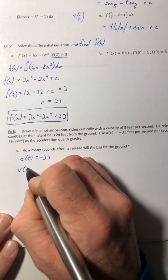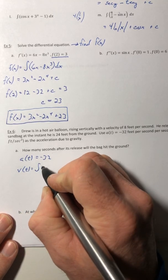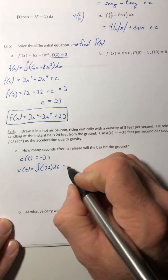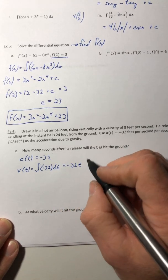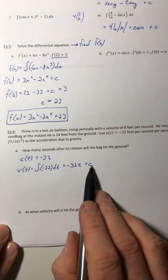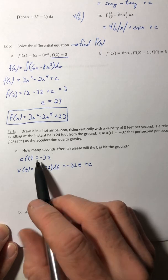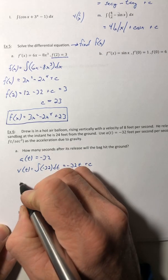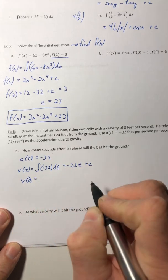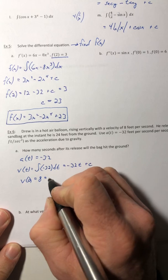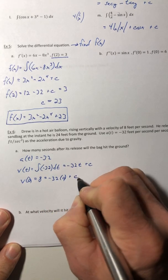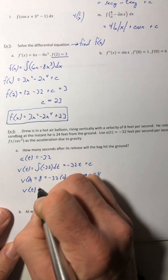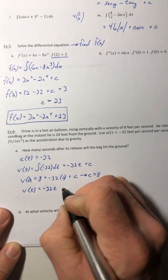So if you integrate once, it'll get you to velocity. And it's with respect to time. So negative 32t plus c. Well, I've got to figure out the c before I can go on. So he's rising vertically with a velocity of 8 feet per second. So when time is zero, his velocity is 8. So if you work that out, c is 8. So now his velocity is just negative 32t plus 8.